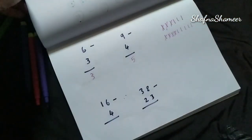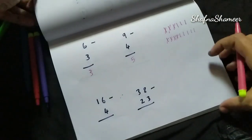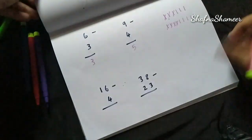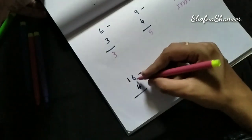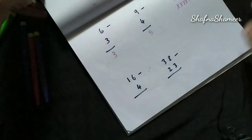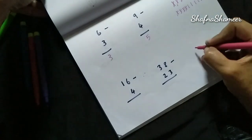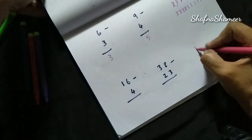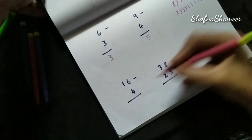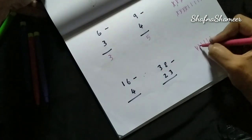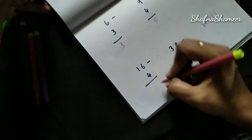This is the picture of the example. We are going to show you subtraction. Now we are going to show you 16 minus 4. First 6 minus 4: 1, 2, 3, 4, 5, 6 — minus 4: 1, 2, 3, 4 — balance 2.